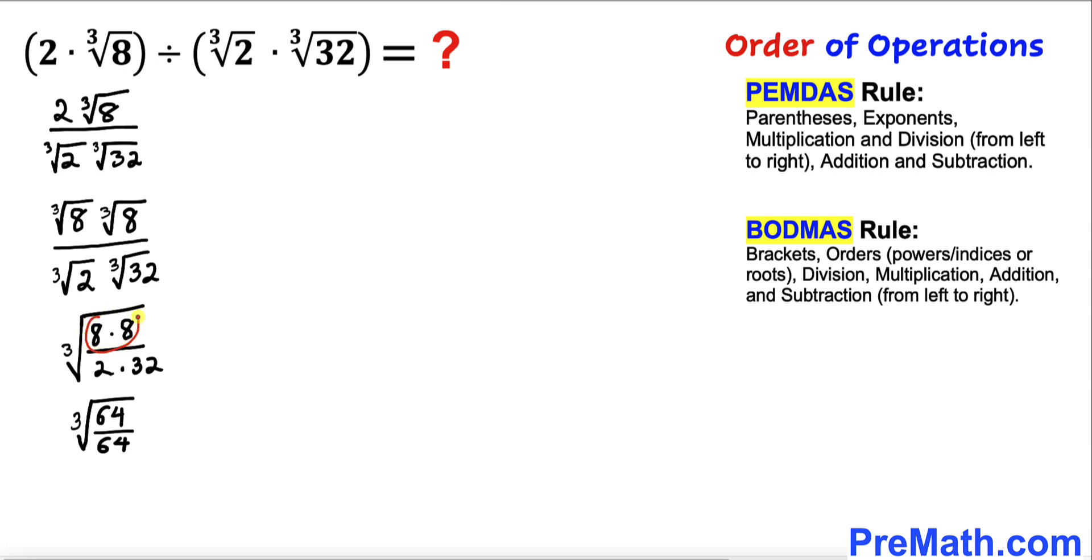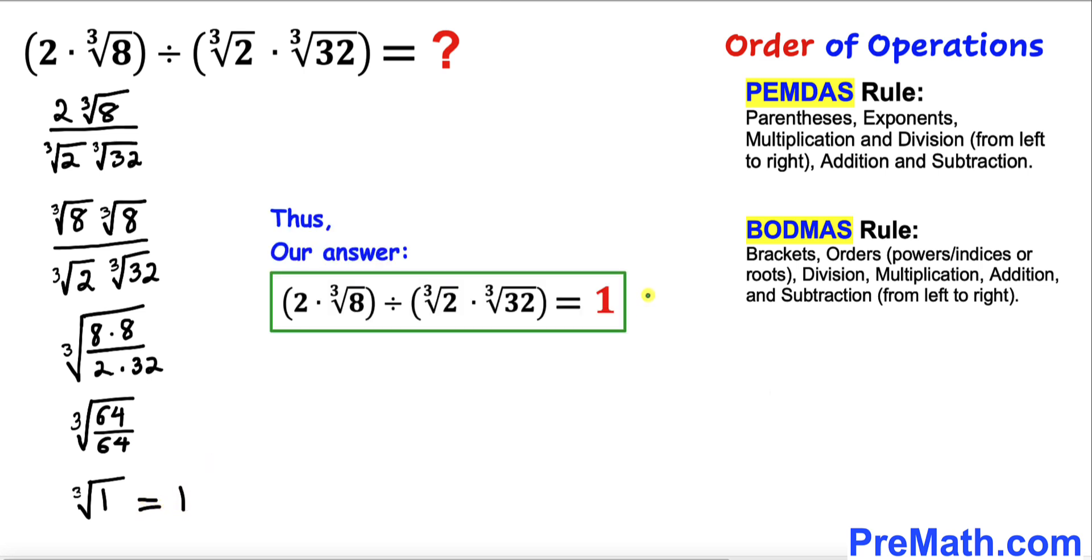And now we know that 8 times 8 is 64 and 2 times 32 is 64 as well. We can see 64 divided by 64 turns out to be simply 1. And we know that the cube root of 1 is 1. Thus our simplified answer turns out to be 1.